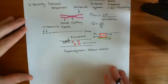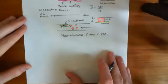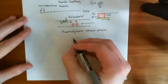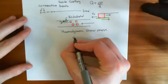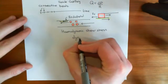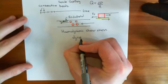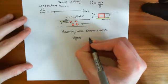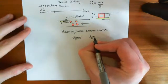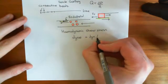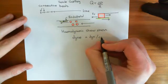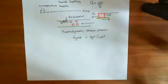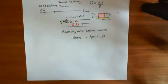I also want to explain the units that hemodynamic shear stress is measured in. It's usually measured in a unit known as dyne, often abbreviated to dyn, per centimetre squared. The centimetre squared you've probably heard of before — dyne is a bit more difficult, so let's look at what that means.